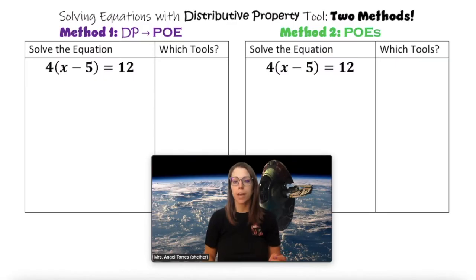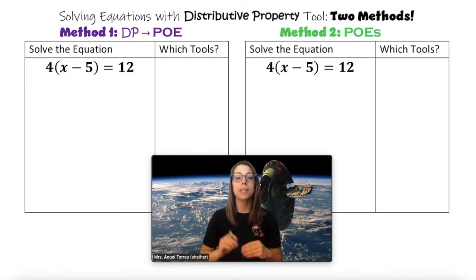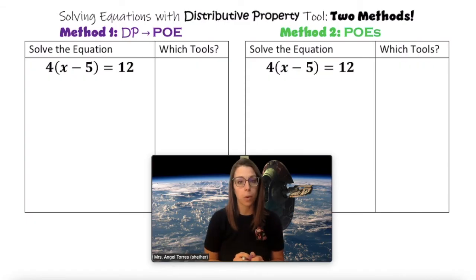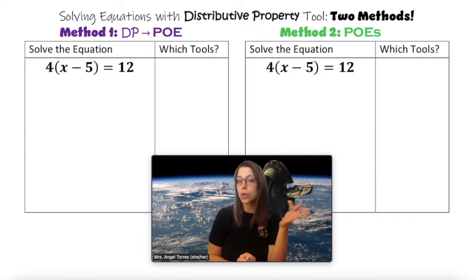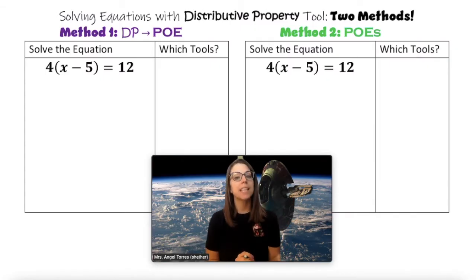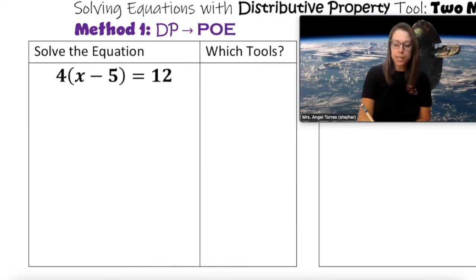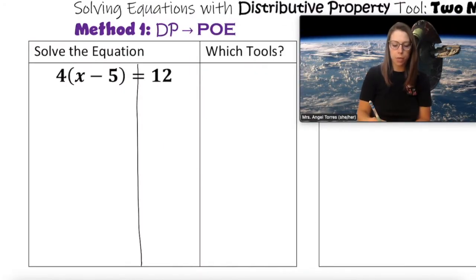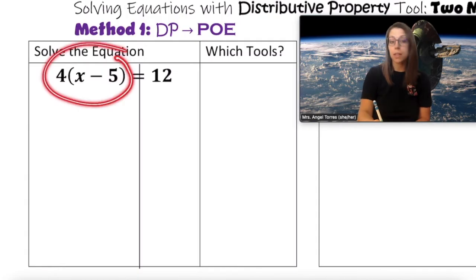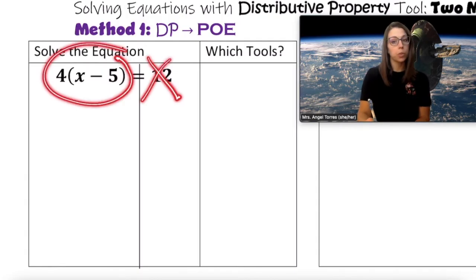For our examples with solving, we're going to look at two different methods. In method one, we're going to apply the distributive property first, then use our properties of equality. But in method two, we're actually going to look at how you can solve the same equation without using distributive property and only using our properties of equality. Let's start with method one. As always, I start by putting a line down the middle of the equal sign. Since the variable in this equation is on the left, I am not concerned with the 12 on the right.